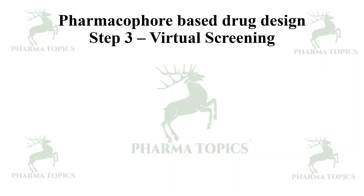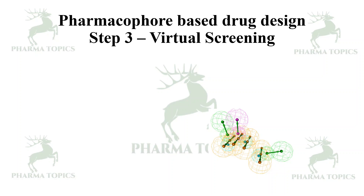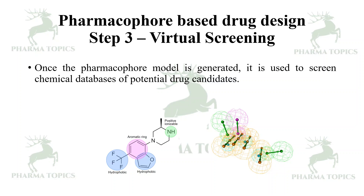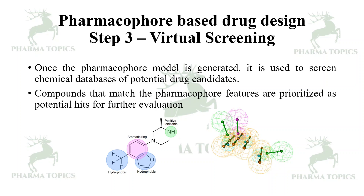Next is virtual screening. The lead molecule is fragmented into different fragments, and the key features responsible for binding with the target are identified — like how many rings are present, how many hydrogen bond donors are present, and what functional groups are present. Once the pharmacophore model is generated, it is used to screen chemical databases of potential drug candidates.